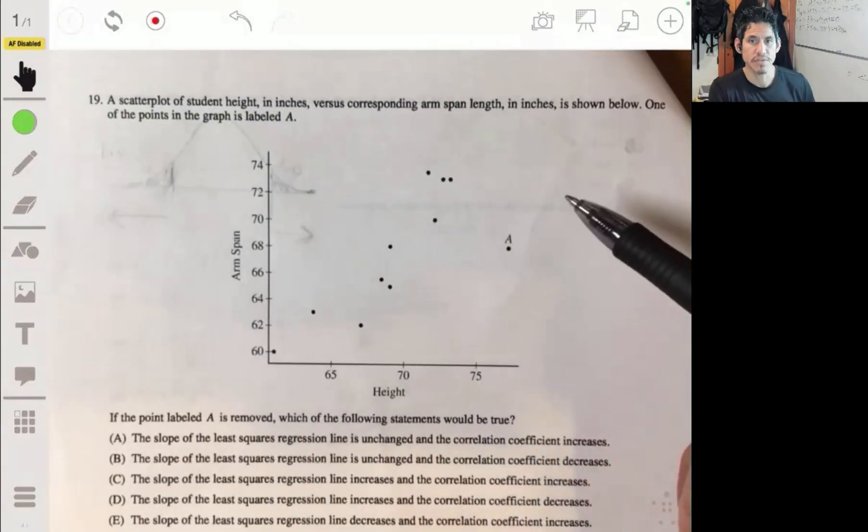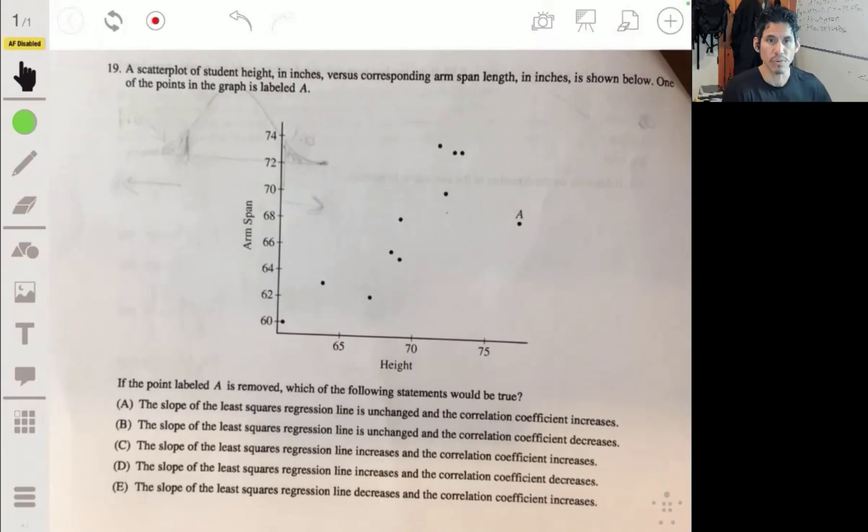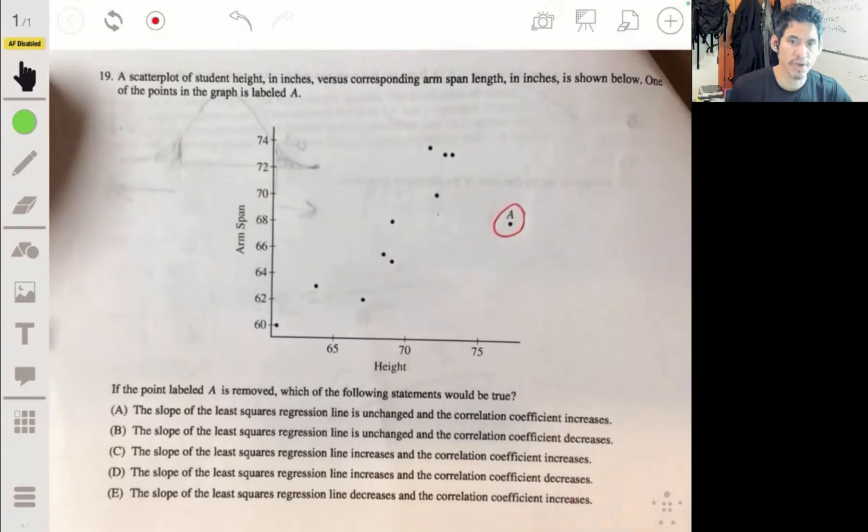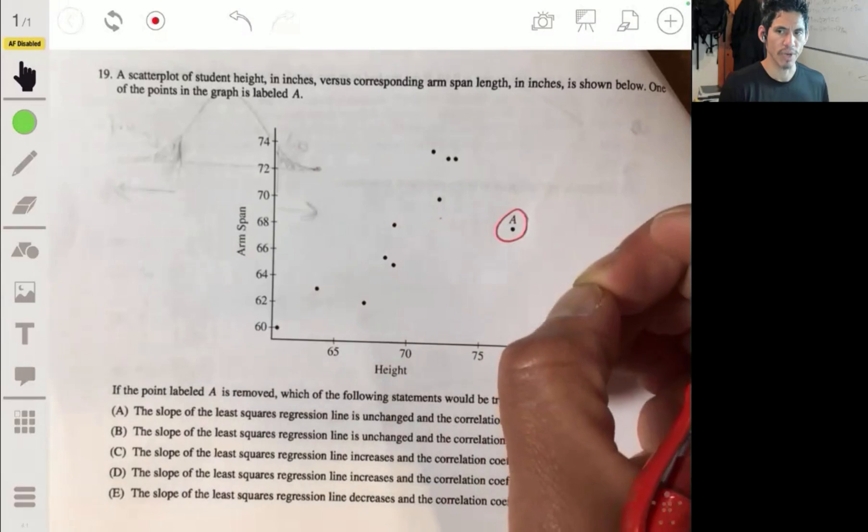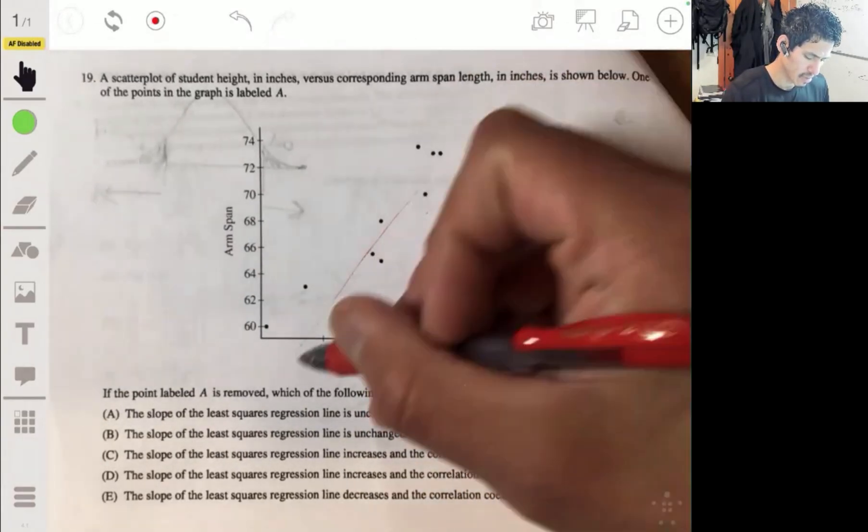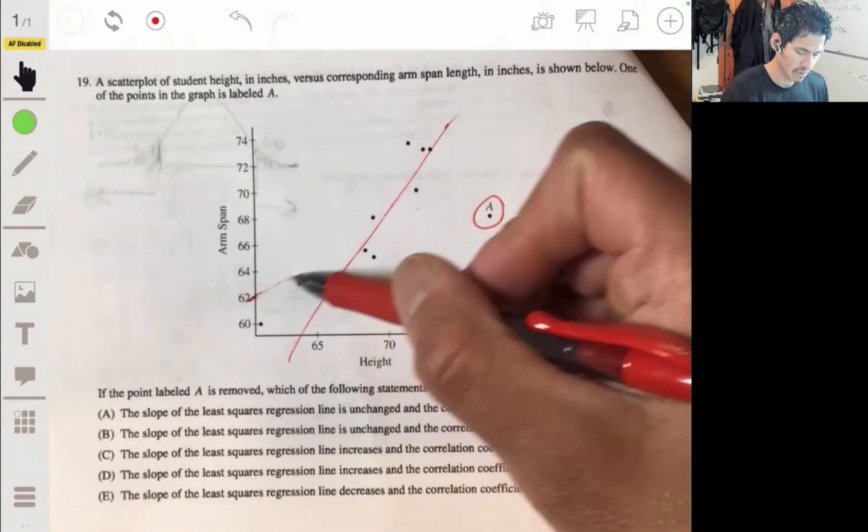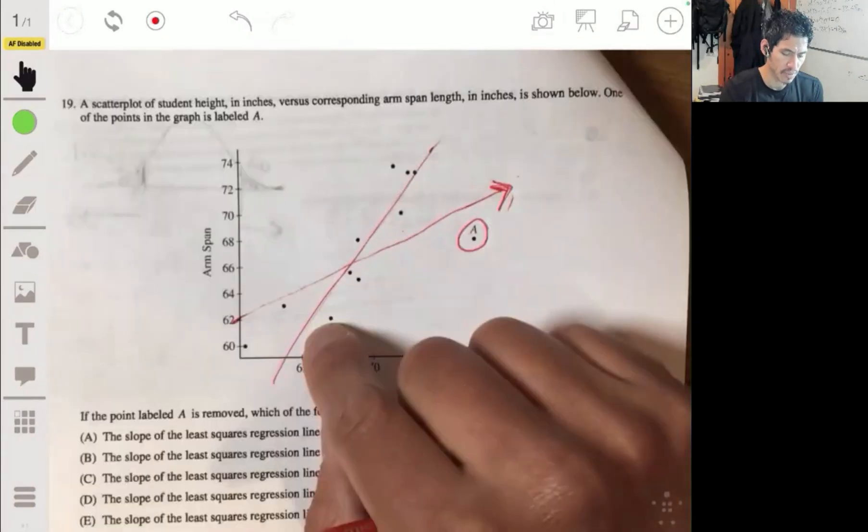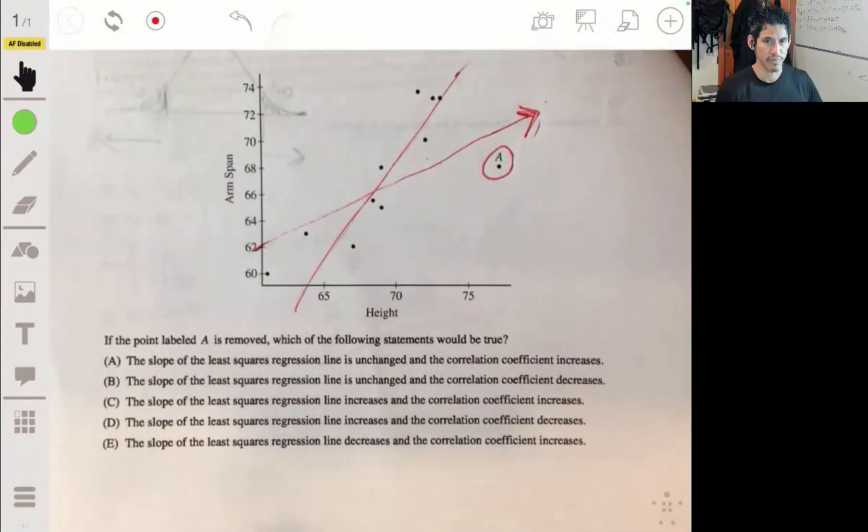Problem 19. A scatterplot of student heights in inches versus corresponding arm length is shown below. One of the points in the graph is labeled A. So if point A, I'll go around in red, if point A is removed, which of the following statements would be true? So just think of it as like if the line, you know, if this wasn't here, the line would go like this, right? It'd probably go something like that. But then since this is there, it's going to drag the line down. The line will maybe look something like this.